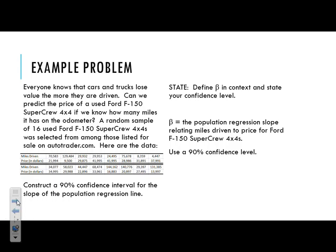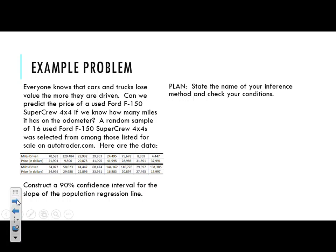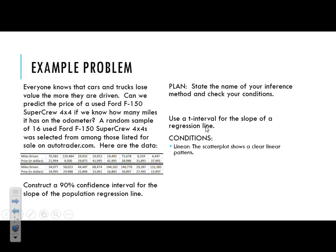Now let's move on to our plan step. The first thing we need to do is name our inference method, then check the conditions. What we're going to use today is what's known as a t-interval for the slope of a regression line. Notice that we use the term 'interval' since we're creating a confidence interval, and the variable t is in there, so we'll be using our t-distribution. If you don't have your gold packet out yet, it would be a wise idea to pull that out, because we will be using it today.